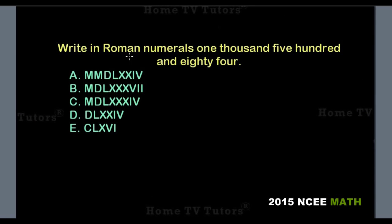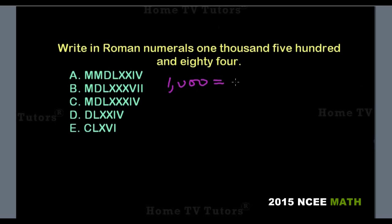Write in Roman numerals 1584. Breaking this down, 1000 in Roman numerals is represented by the symbol M. Then for 500, it is represented by the symbol D.